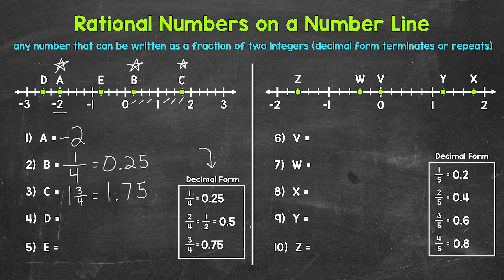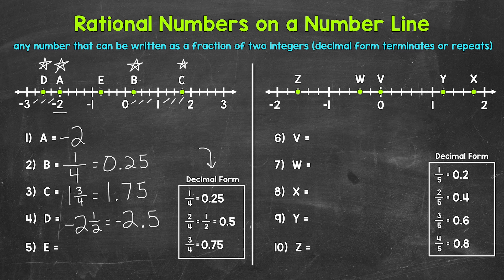Next, we have point D, which is between negative two and negative three. We have negative two and one fourth, negative two and two fourths (negative two and a half), and then negative two and three fourths. So point D is at negative two and a half, which in decimal form is negative 2.5.